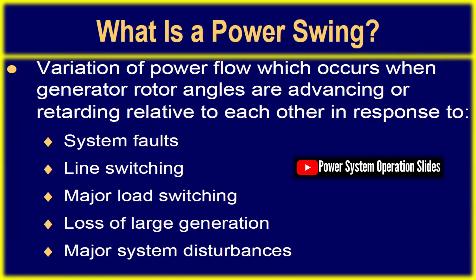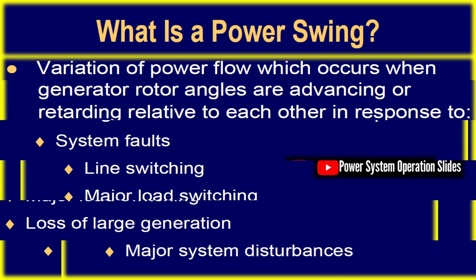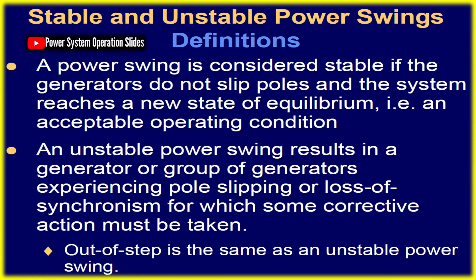Power system disturbances such as faults, line switching, or sudden load fluctuations can trigger power swings. If these swings become excessive, generators may lose synchronism with one another. To mitigate this, out-of-step protection was developed, enabling rapid detection and response to separate asynchronous areas.